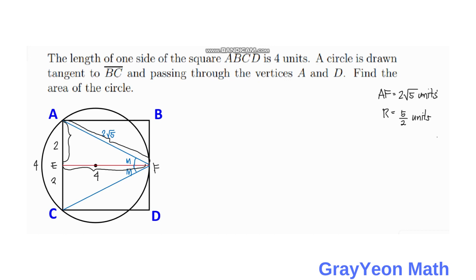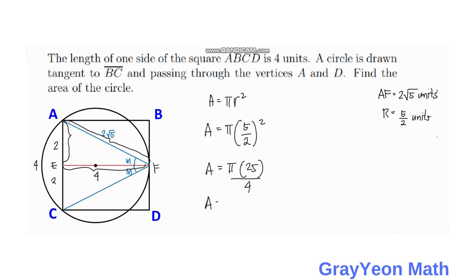Now that we know the radius of the circle is 5/2, it is easy to find the area. Area equals π times r squared, so area equals π times (5/2) squared, which equals π times 25/4. The area equals 25π/4 square units, and that is our answer for the first method.